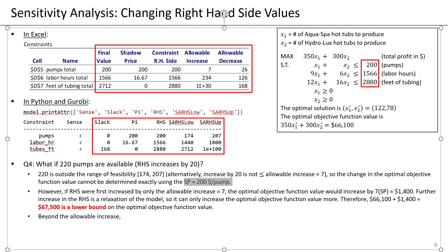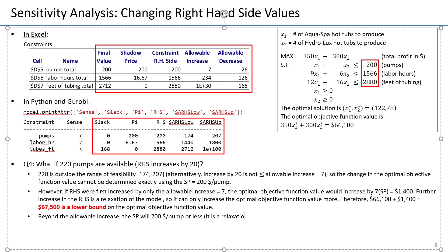It is not going to be more than $200 per pump. Why? In optimization, when we maximize the profit, we must be choosing the best opportunities to use the pumps first. So if now every extra pump is worth $200, as we add more pumps, we will run out of the good opportunities and will only be left with the worst opportunities, giving us fewer dollars per pump. So beyond the allowable increase, the shadow price will be $200 per pump or less — most likely less — because it is a relaxation of the model.